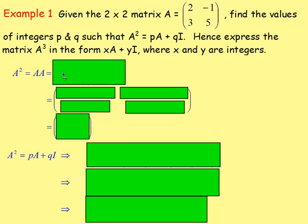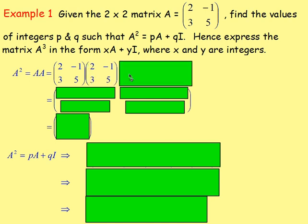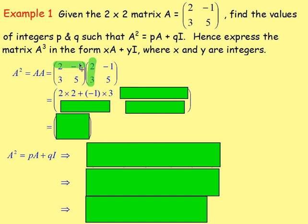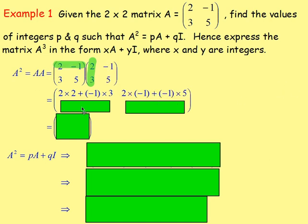So let's find A² first. A² is matrix A times matrix A — that's [2, -1; 3, 5] multiplied by [2, -1; 3, 5]. Matrix A is 2x2, so we know they can be multiplied and the result will be 2x2. To find the entry in the first row, first column: 2×2 + (-1)×3. For the first row, second column: 2×(-1) + (-1)×5. For the second row, first column: 3×2 + 5×3. For the second row, second column: 3×(-1) + 5×5.